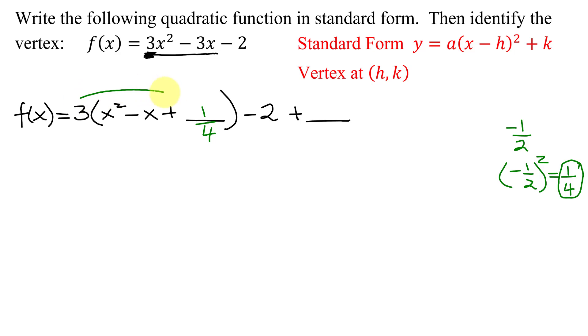But what have I really added to this part of the equation? I added 3 times 1/4, which is 3/4. So since I added 3/4 to this part of the equation, I'm going to have to subtract 3/4 here. So the -3/4 and the positive 3/4 add to 0.